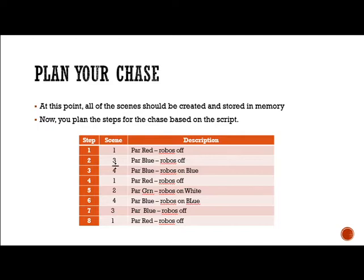I've got a simple one here. Step one is going to be scene one, which is my pars are red and the robos are off. Step two is going to use scene three, where the pars are going to turn blue and the robos are off. Step four, pars are blue, the robos are on blue, and so on. So we have a list of things that we want to do.